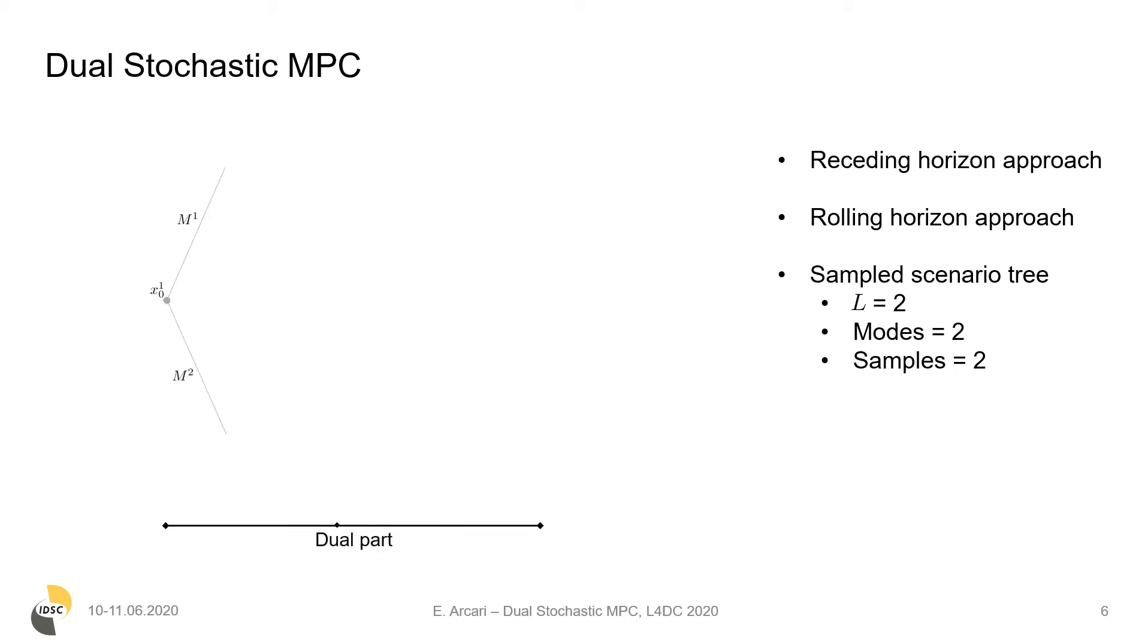In the dual part for each mode of the system, we generate samples of the parameters and of the noise from the current distribution. We then update the distribution and repeat the same as before for each visited state.